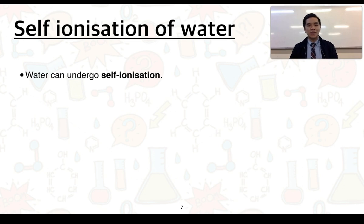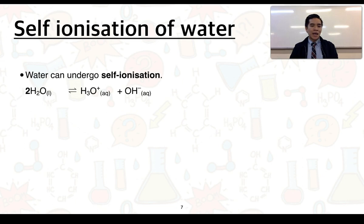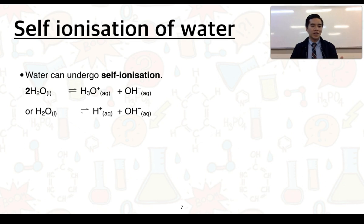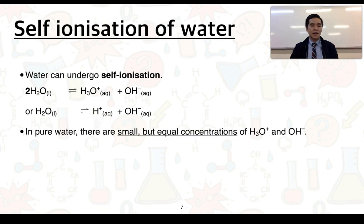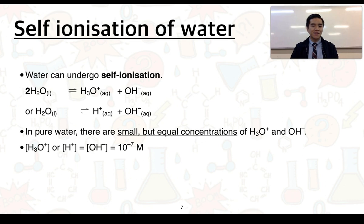To look at this idea, we're going to consider water. Water is quite unique in that it can undergo a process known as self-ionization — it effectively reacts with itself to produce ions. One water molecule can donate its proton to another, forming hydronium ions (H₃O⁺), while the donor forms OH⁻, a hydroxide ion. Equivalently, water can dissociate into hydrogen ions and hydroxide ions. In pure water, there are small but equal concentrations of these two ions, equivalent to 10⁻⁷ moles per litre.